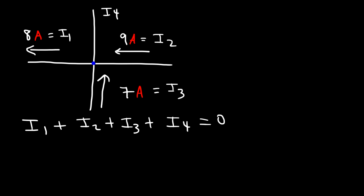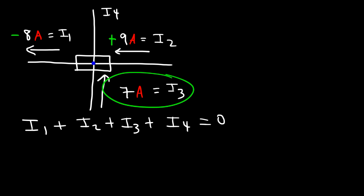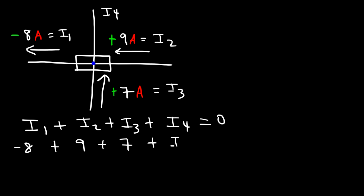Is I1 positive or negative? The 8 amp current is leaving the junction, so we assign it a negative value: I1 is negative 8. The 9 amp current, I2, is going toward the junction, so it's positive 9. I3 also flows toward the junction, so it's positive 7.